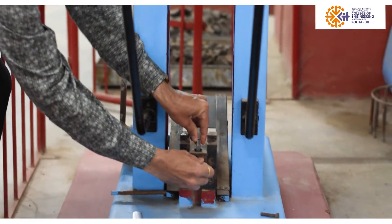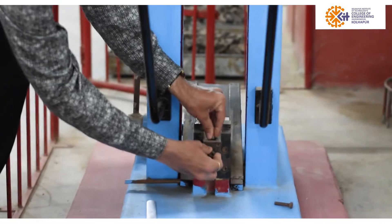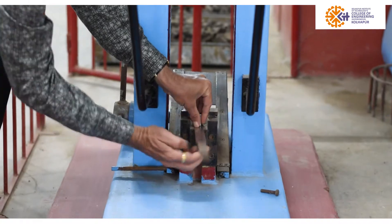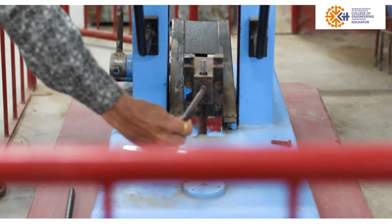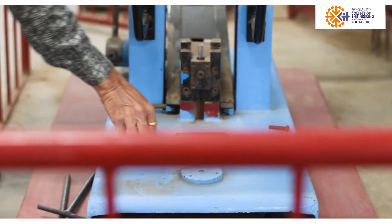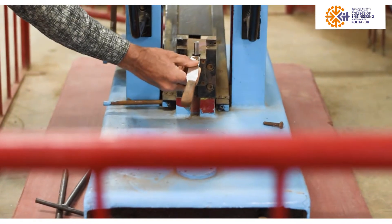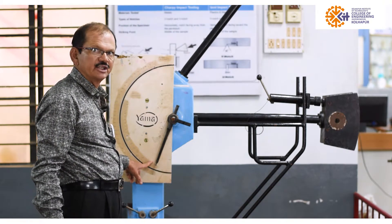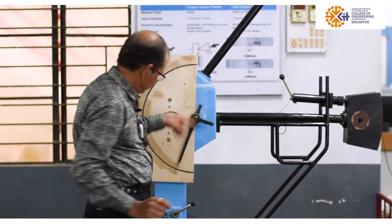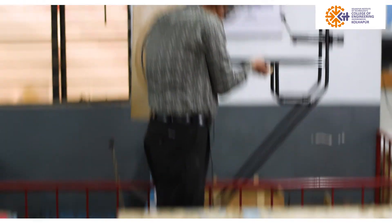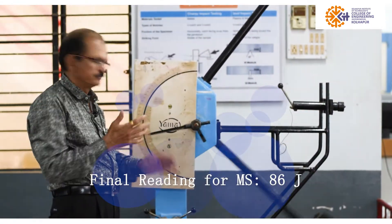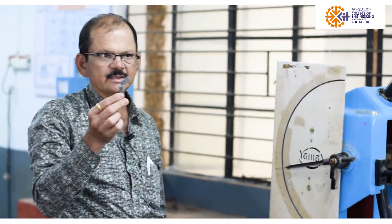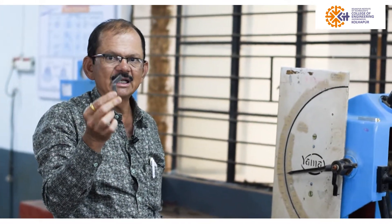We fix the mild steel specimen in the cantilever position. The pointer is set to the maximum reading of 168 joules, and we release the hammer. The reading is 86 joules. You can see the specimen is bent — this is the mild steel specimen.